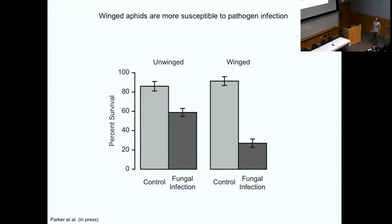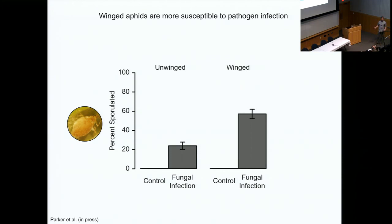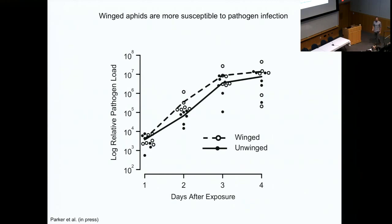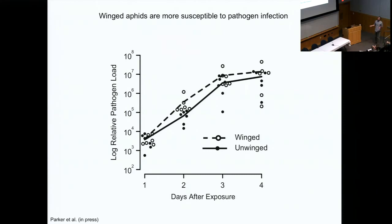We compared the resistance of winged and wingless aphids that are genetically identical, differing only in whether they have wings. Contrary to our expectation, winged aphids are more susceptible to infection while unwinged aphids are more resistant. We measured this in terms of survival, the percent that produced sporulating cadavers, and using qPCR to measure pathogen load — how many copies of the fungal 18S gene can we find in an aphid. Pathogen loads were higher in winged aphids on a log scale, suggesting winged aphids are more susceptible to fungal pathogen infection than unwinged aphids.